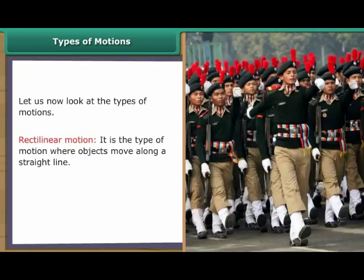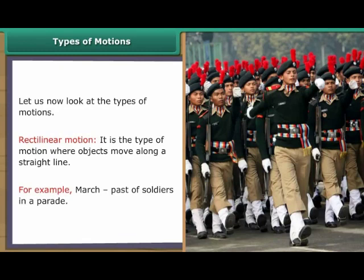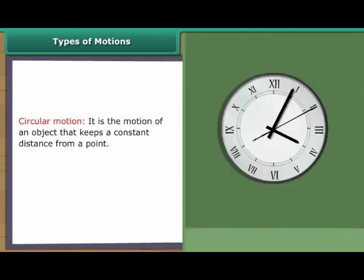Rectilinear Motion. It is the type of motion in which objects move along a straight line. For example, it is the motion of an object that keeps a constant distance from a point. For example, hands of a clock.